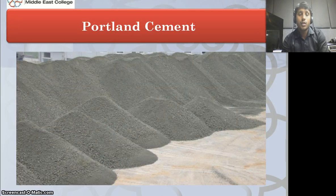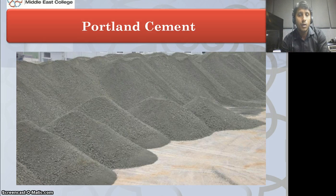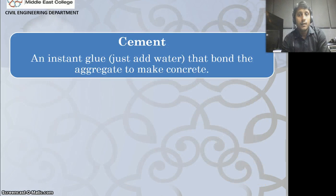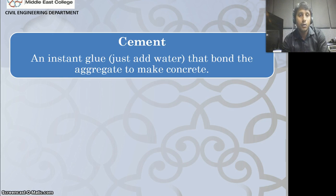Now, coming to the important topic: Portland cement. What is Portland cement? This is a question that can be asked in the classroom. Cement, as I already told, when added with water, starts setting — it acts like a bonding material. It is an instant glue that bonds the aggregate to make concrete. So cement is the main bonding material for aggregate, acting as an instant glue. Cement plus water equals glue — it is nothing but bond material.